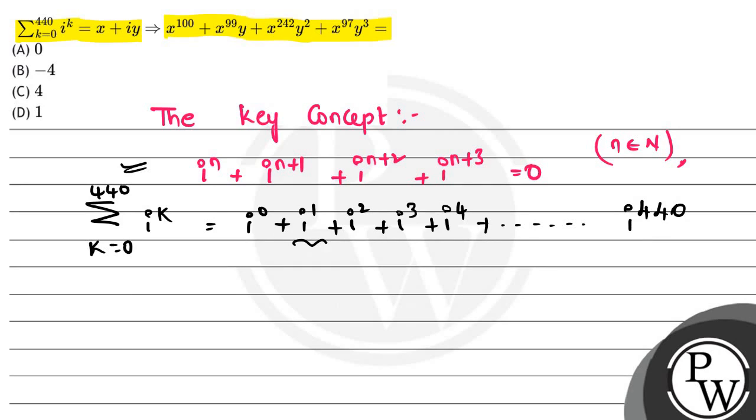Now, iota^1 + iota^2 + iota^3 + iota^4 equals 0. The next group, iota^5 + iota^6 + iota^7 + iota^8, this group is also 0.